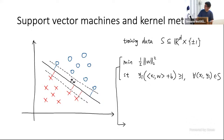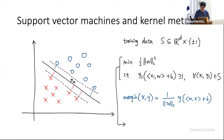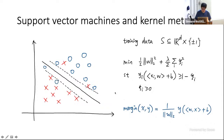Let's start with a recap of classical support vector machines and kernel methods. On the left-hand side, you can see a set of training data labeled by plus-minus-one as indicated by color. The support vector machine algorithm is a convex optimization problem. A very important quantity is what we call the margin, which for any data point essentially means the distance to a hyperplane. This convex optimization is trying to maximize the minimum margin of the training set to the hyperplane — we can think of this as putting a very thick board in between the training set.